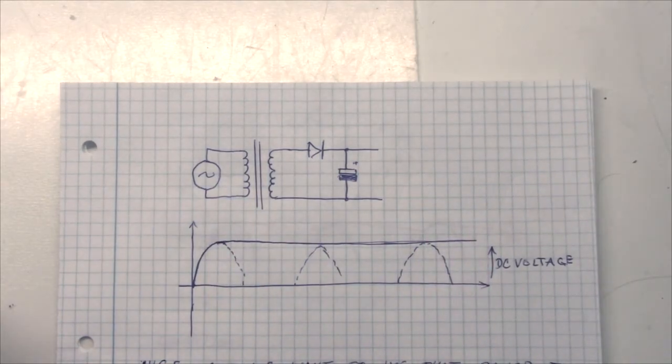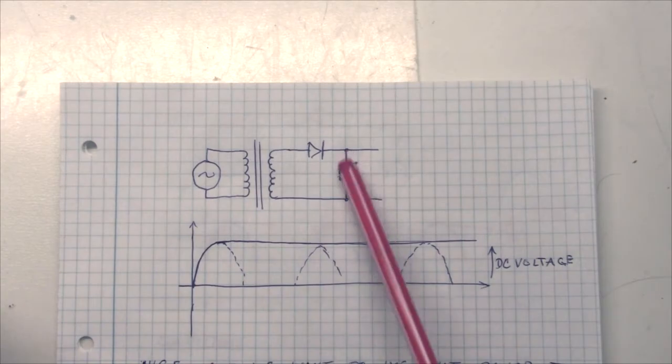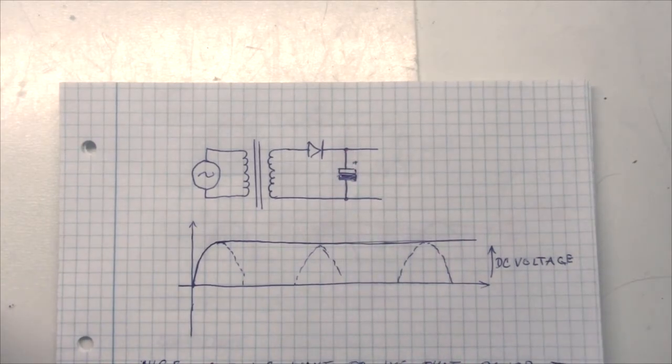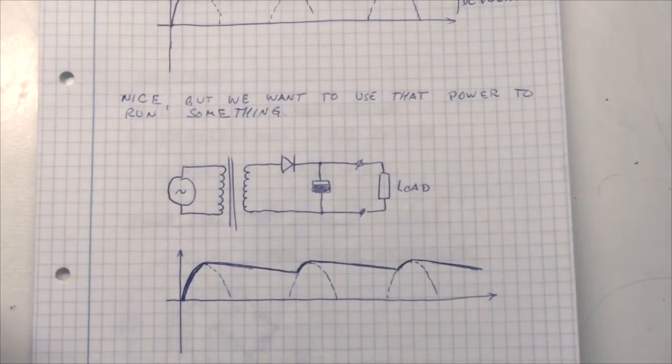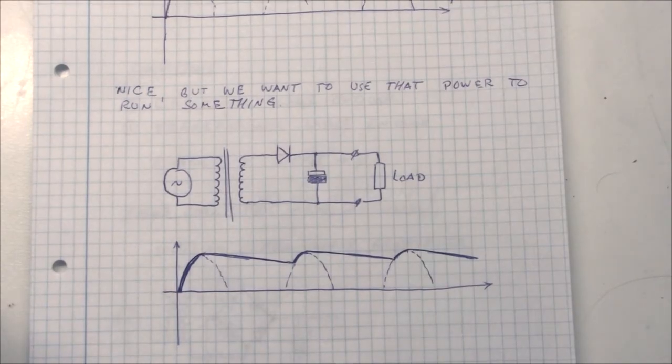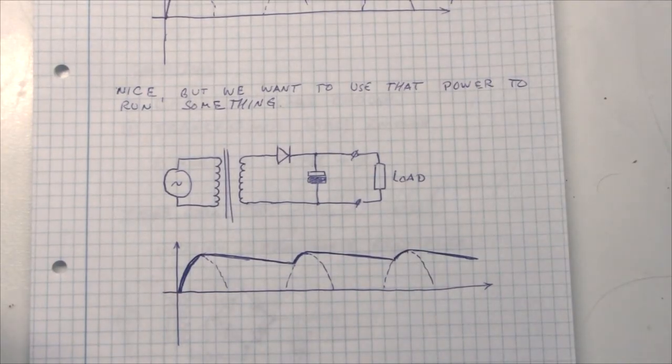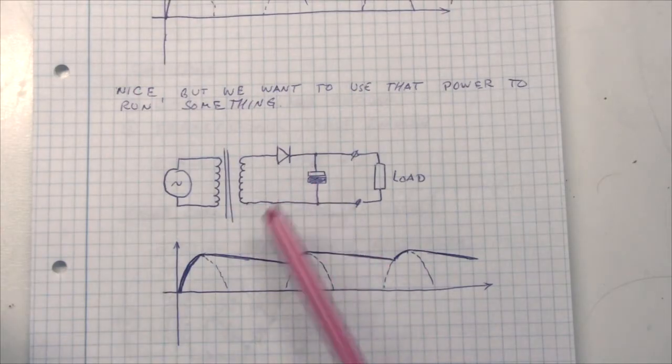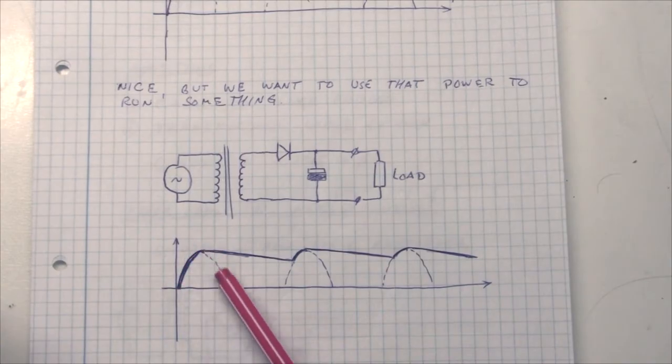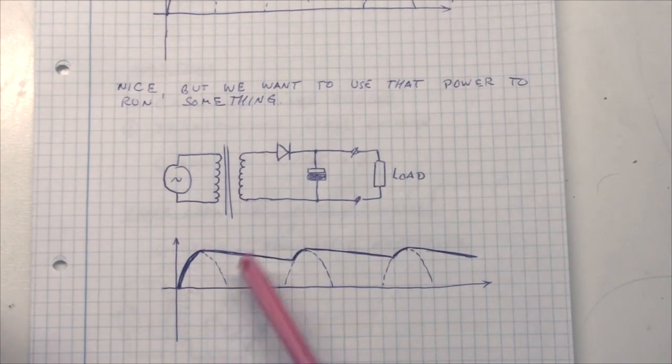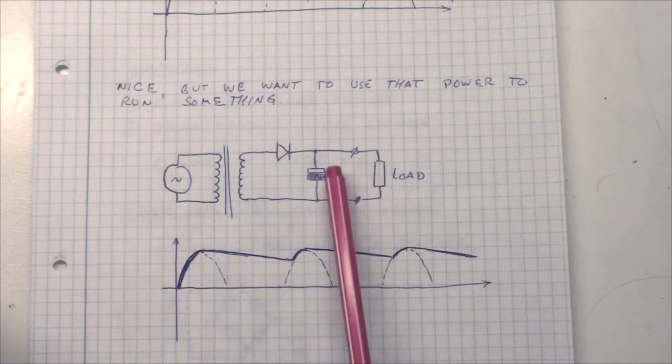Now the problem we have here is that, in this circuit, of course, we are not driving any electronics. We are just making a nice DC supply. But of course, we want to run some electronics. We want to have a load, and I have drawn this load as a resistor, but it could just as well be an LCD display, or a computer, or a microcontroller, or whatever. Anything that requires DC to run.